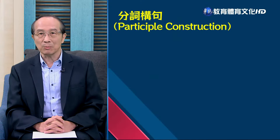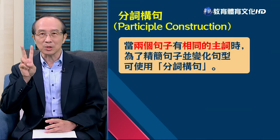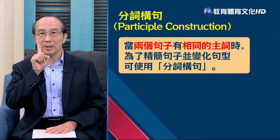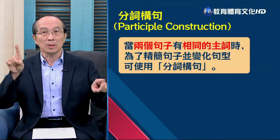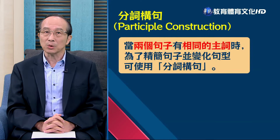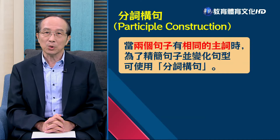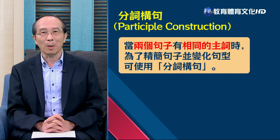剛剛講解的都是一些比較基本的概念，接下來我們來看一個稍微進階一點的用法——什麼是分詞構句（Participial Construction）？當兩個句子有相同主詞的時候，同學們一定要記得，這是基本的門檻跟條件，一定要有兩個句子而且必須有相同的主詞。這個時候為了精簡句子並且變化句型，就可以使用分詞構句。分詞構句不但可以簡化句子，也可以讓寫作的句型更有變化。